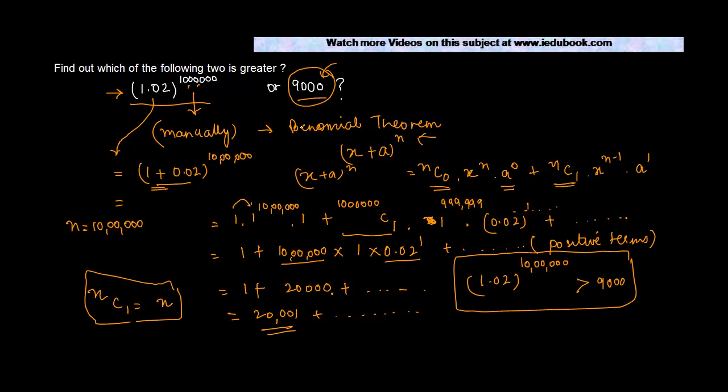So by using the binomial expression, we were able to find out that a number which was seemingly small, with a great power, is definitely greater than another number, or maybe even smaller than that, who knows if there's a different question.